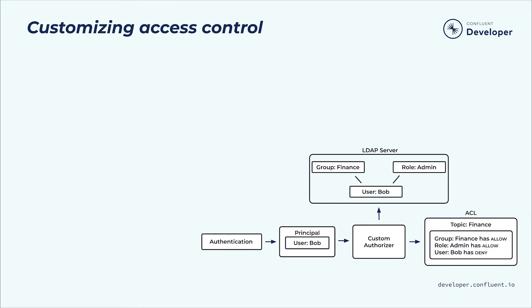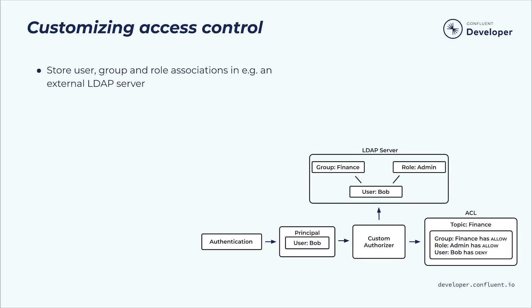How might you better manage access controls for large organizations with many business units, teams, and clusters? Fortunately, Apache Kafka has you covered, but there is some additional configuration and developmental overhead involved. To implement group or role-based access control, you'll need to do several things. First, you'll need an external system that allows you to associate users with roles and/or groups — typically something like an LDAP store, where you configure your group, role, and user hierarchies. Next, you apply ACLs to resources based not only on users, but also on roles and groups.